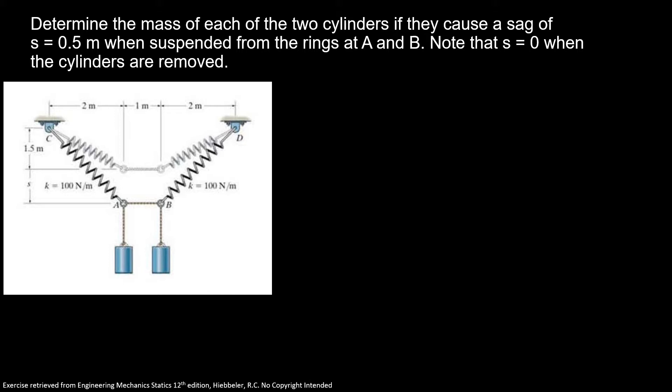Determine the mass of two cylinders if they cause a sag of s equals 0.5 meters when suspended from the rings at A and B. Note that s equals 0 meters when the cylinders are removed.